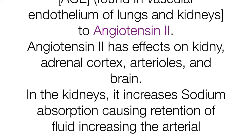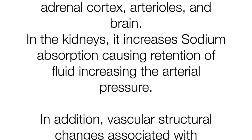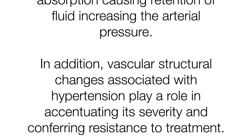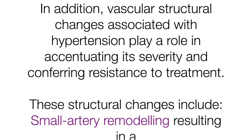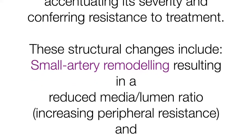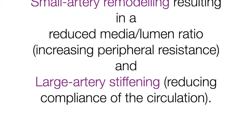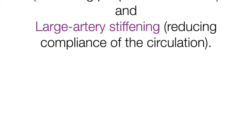Angiotensin-2 has effects on the kidneys, adrenal cortex, arterioles, and brain. In the kidneys, it increases sodium absorption, causing retention of fluid and increasing arterial pressure. Vascular structural changes associated with hypertension include small artery remodeling resulting in a reduced media-lumen ratio, increasing peripheral resistance, and large artery stiffening reducing compliance of the circulation.